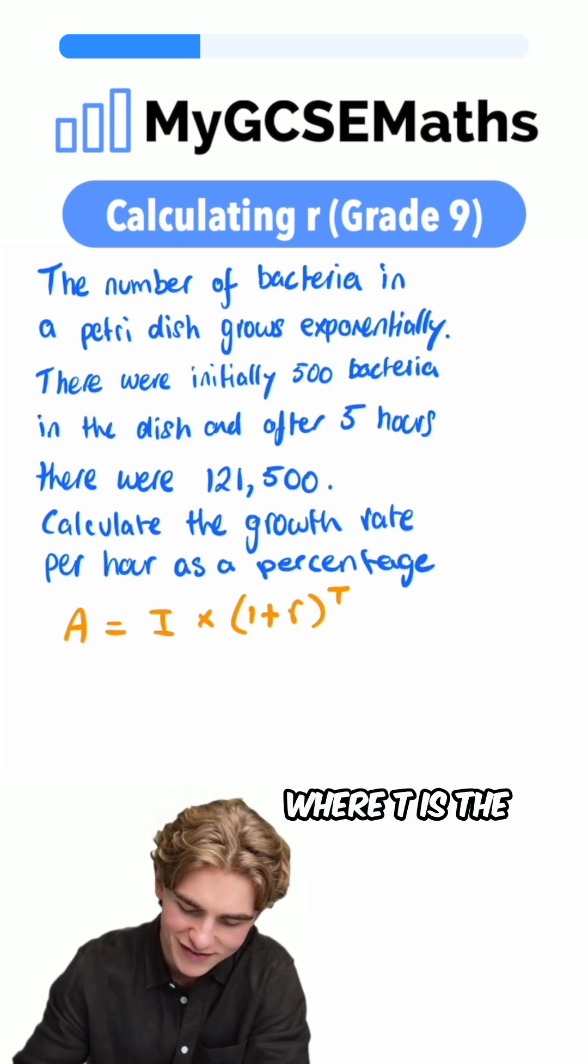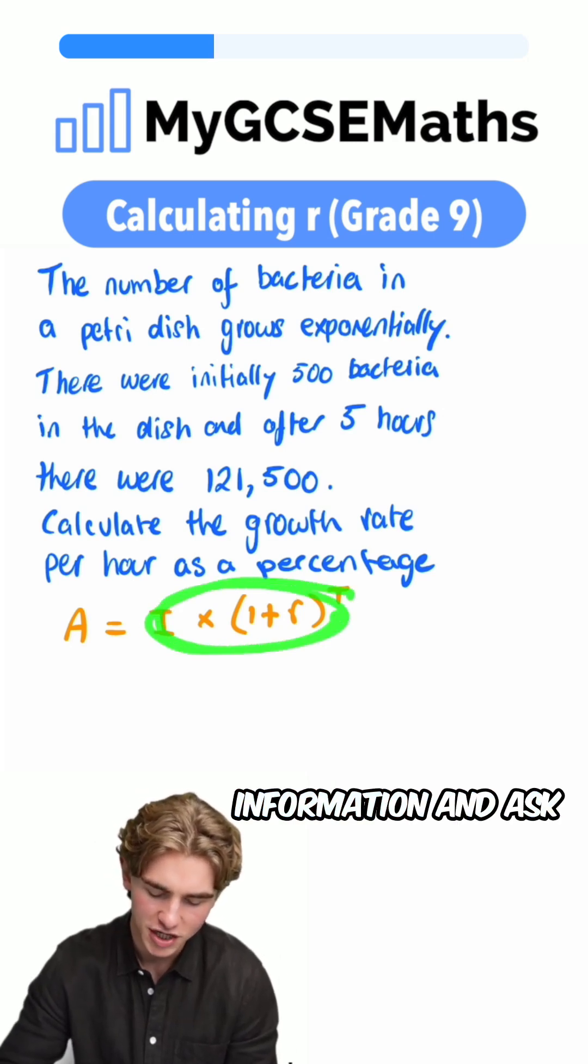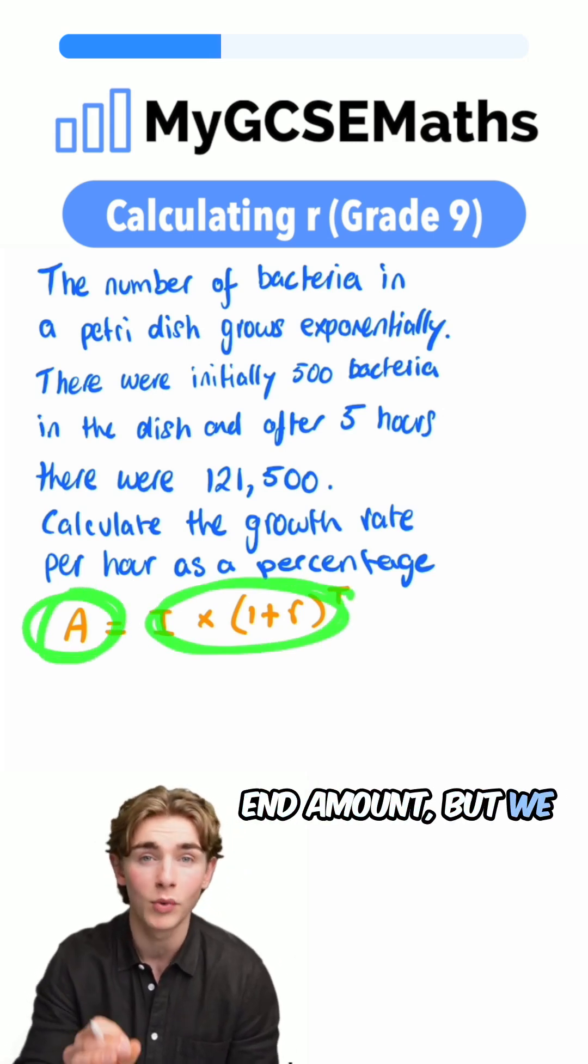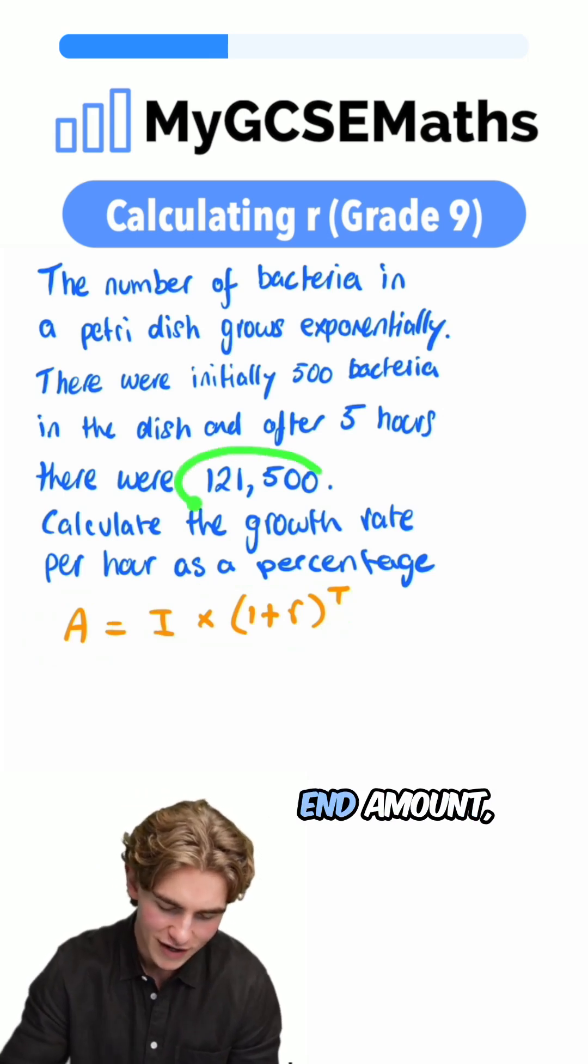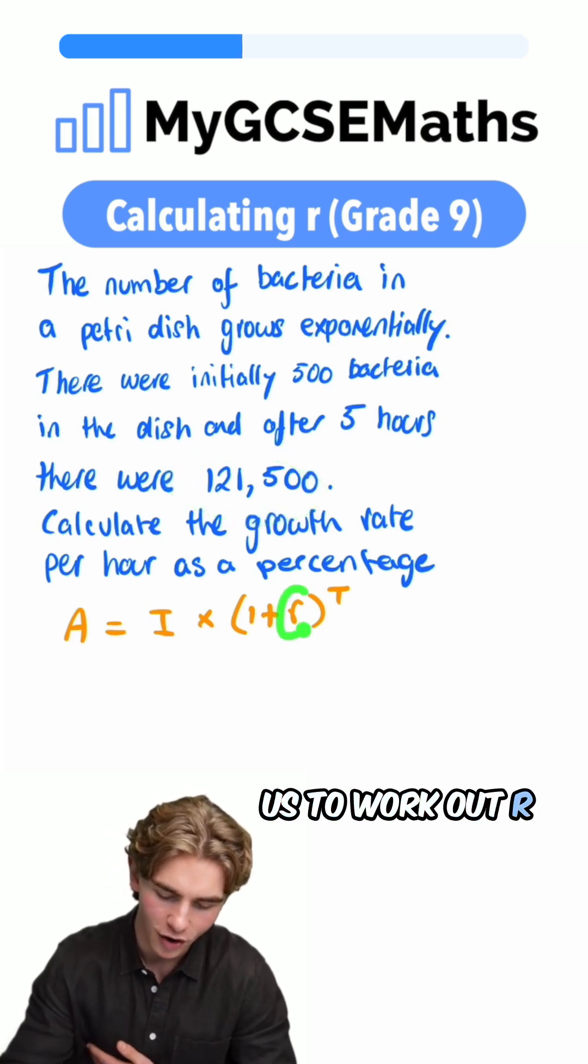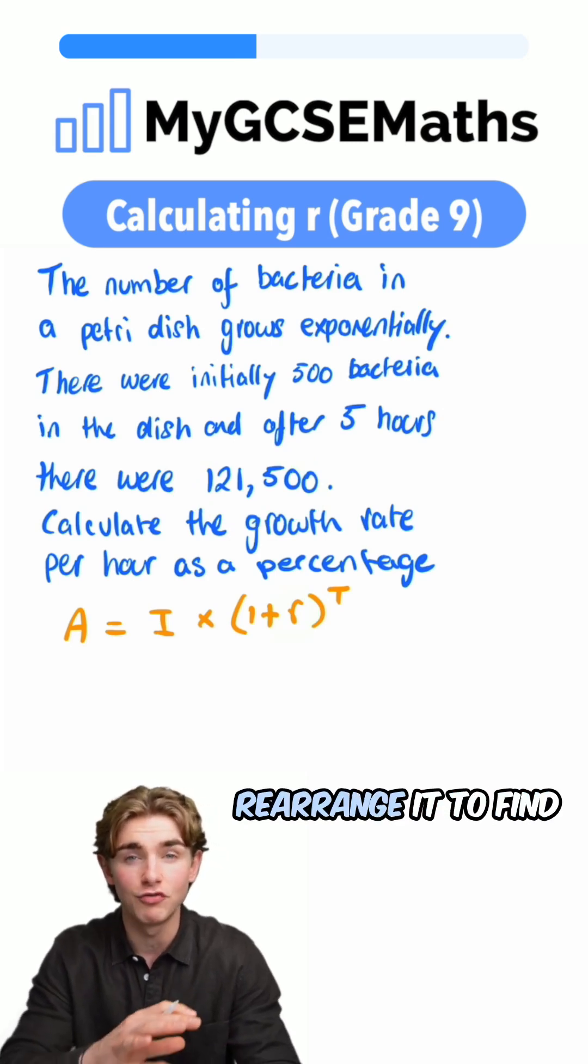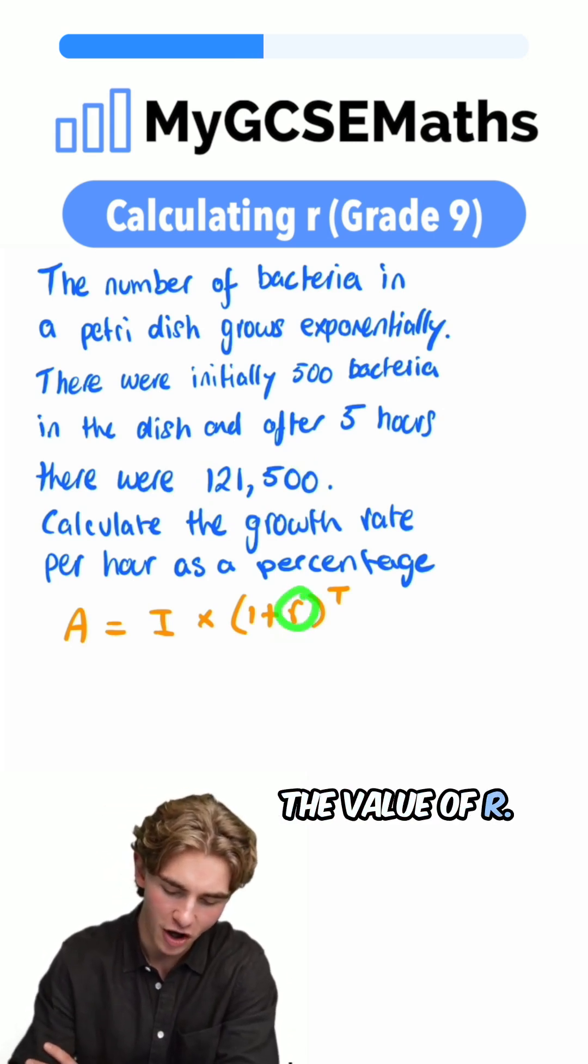Normally a question will give us this information and ask us to work out the end amount, but we can see that this one tells us the end amount, 121,500, and asks us to work out r, the growth rate. What we're going to do is substitute in what we know and then rearrange it to find the value of r.